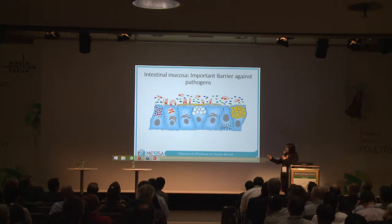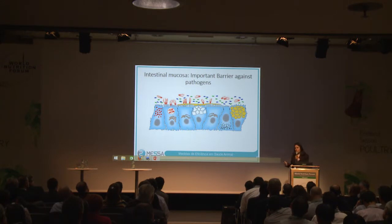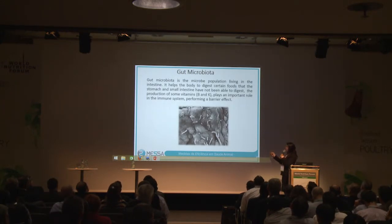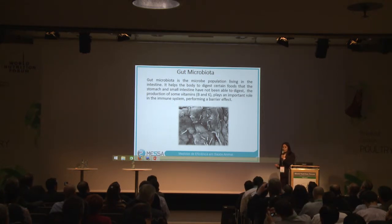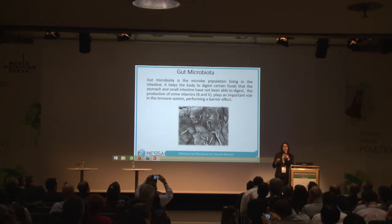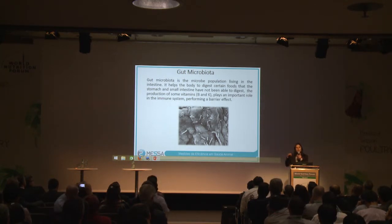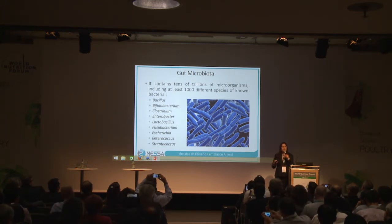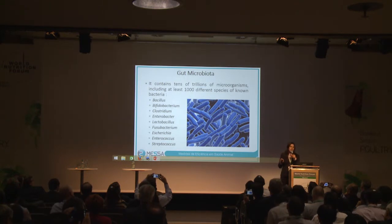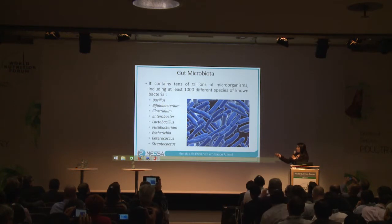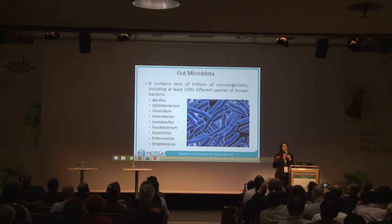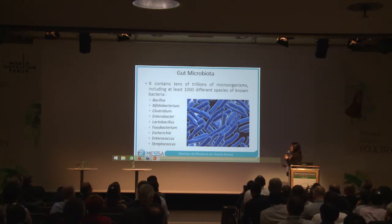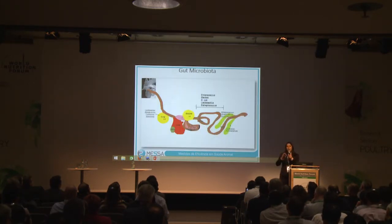The gut microbiota is in contact with the intestinal mucosa, and this relationship is very important for animal growth. The gut microbiota helps the body digest certain foods that the stomach and small intestine are not able to digest. This is important for monogastrics, and they play an important role for the immune system, which is very relevant when talking about broiler growth and performance. In gut microbiota, there are very different kinds of bacteria that could be inside, and most of the microorganisms inside the gut have not yet been identified.